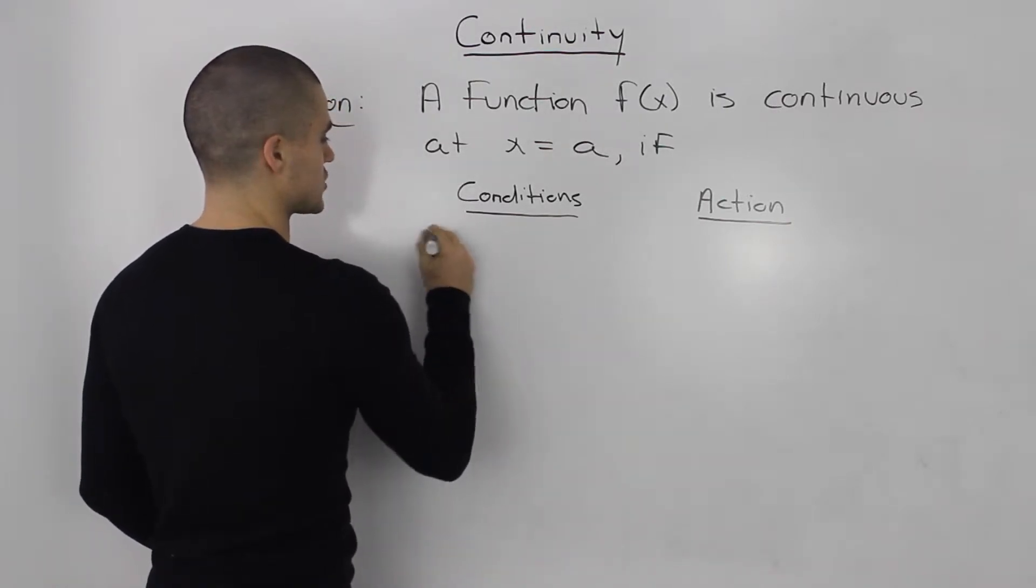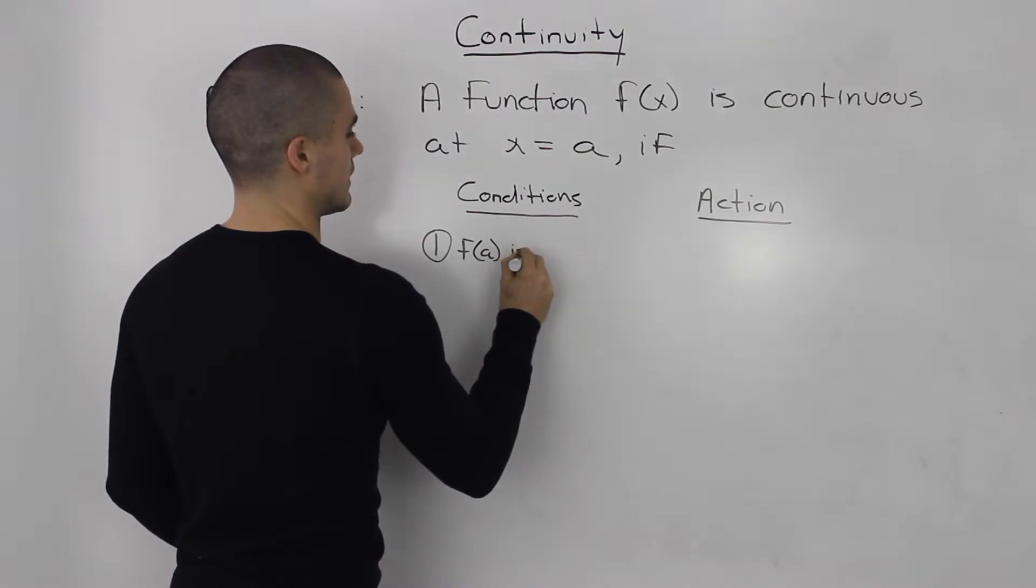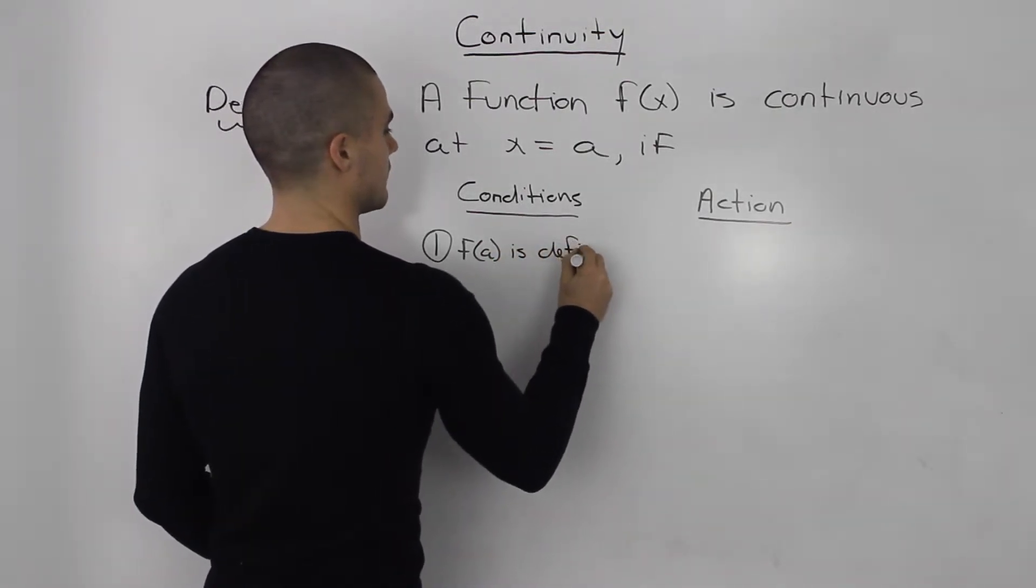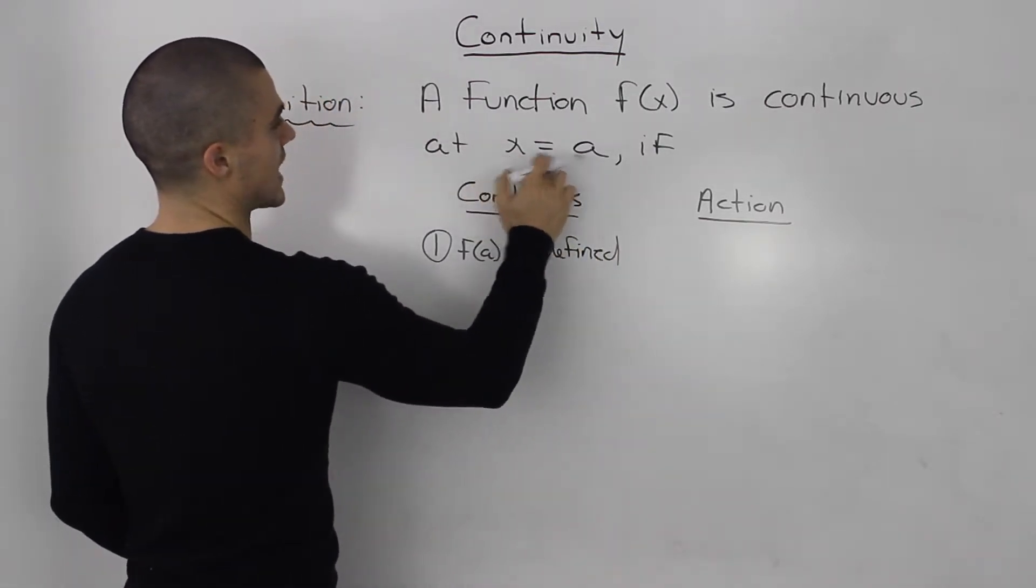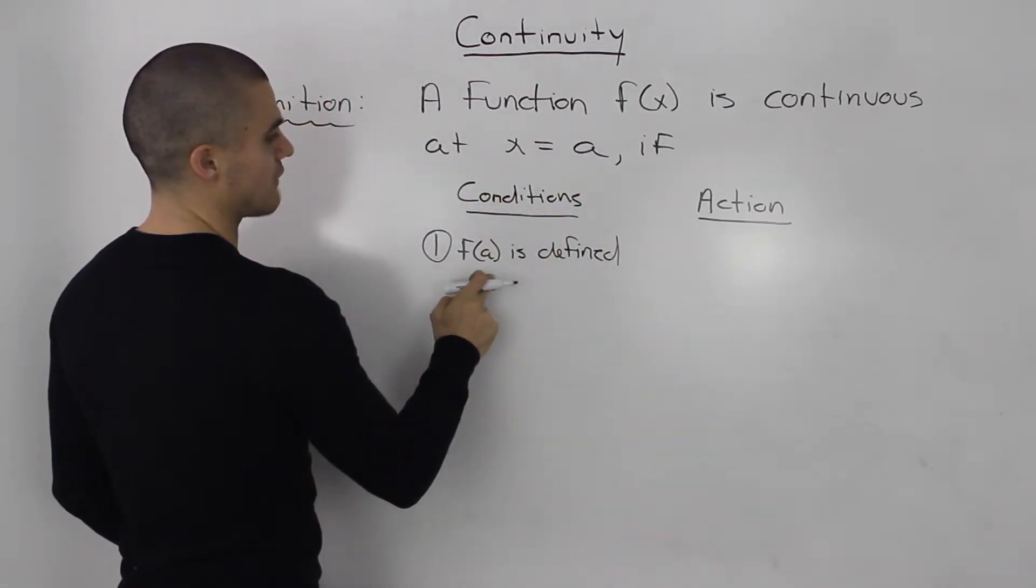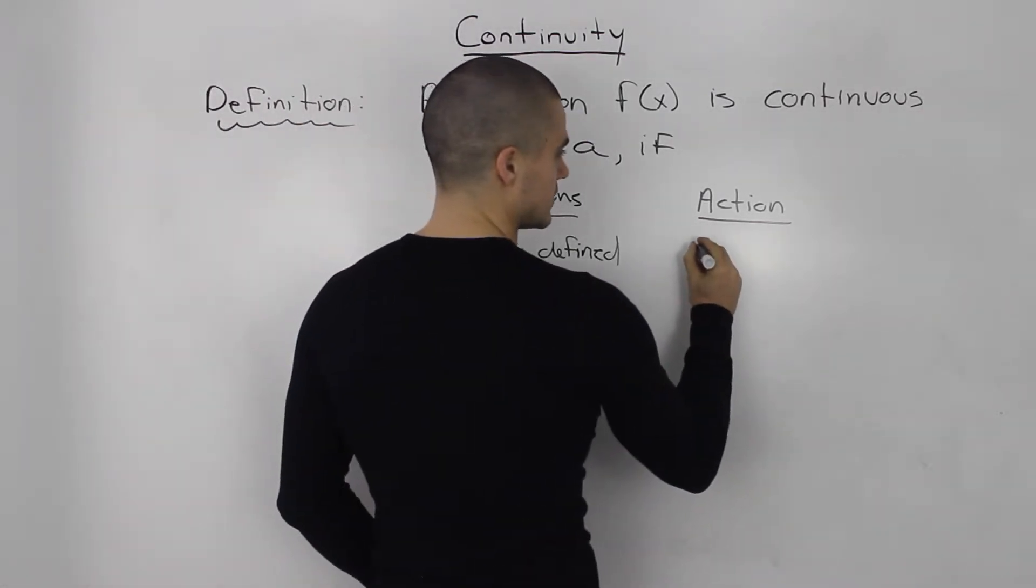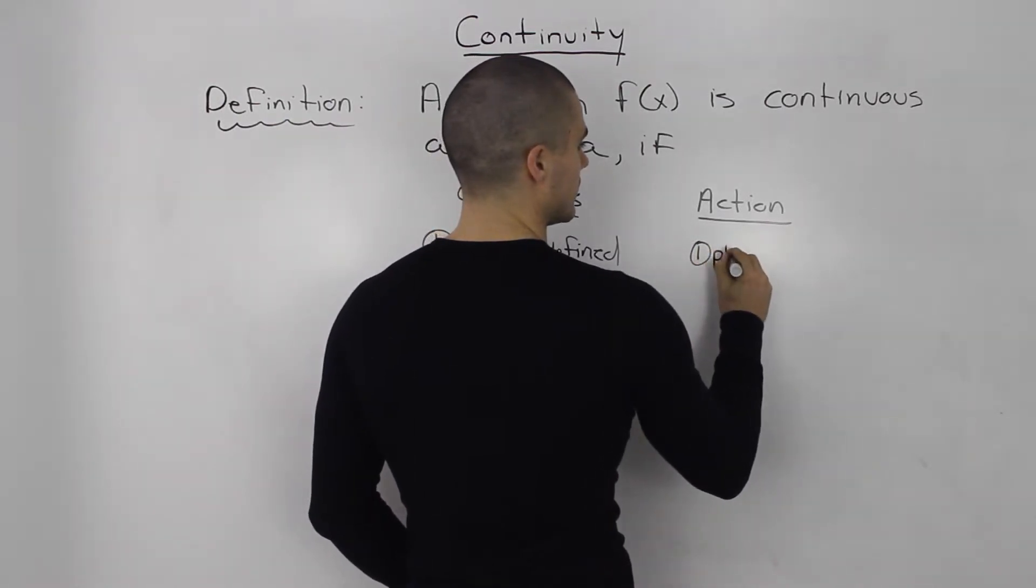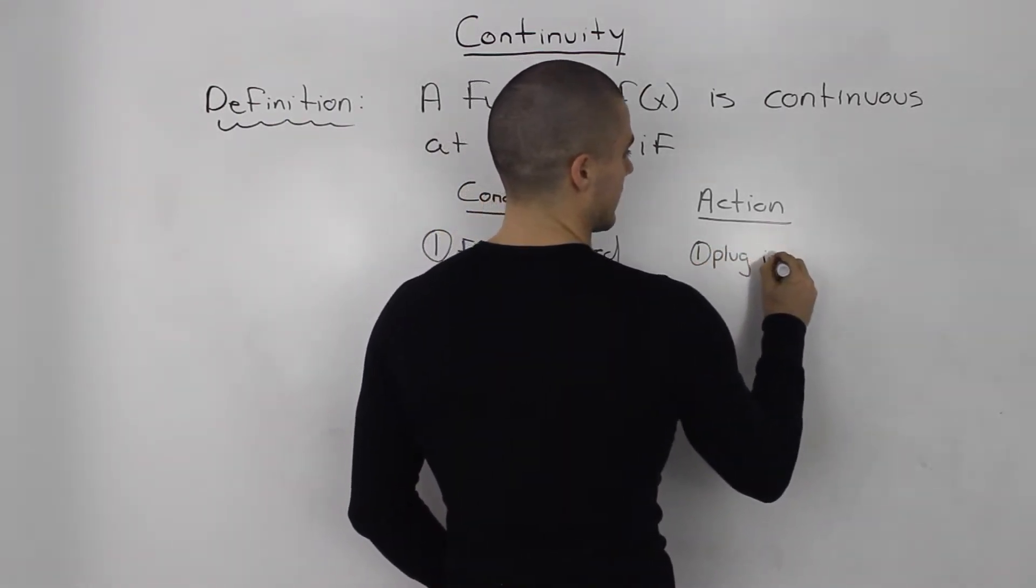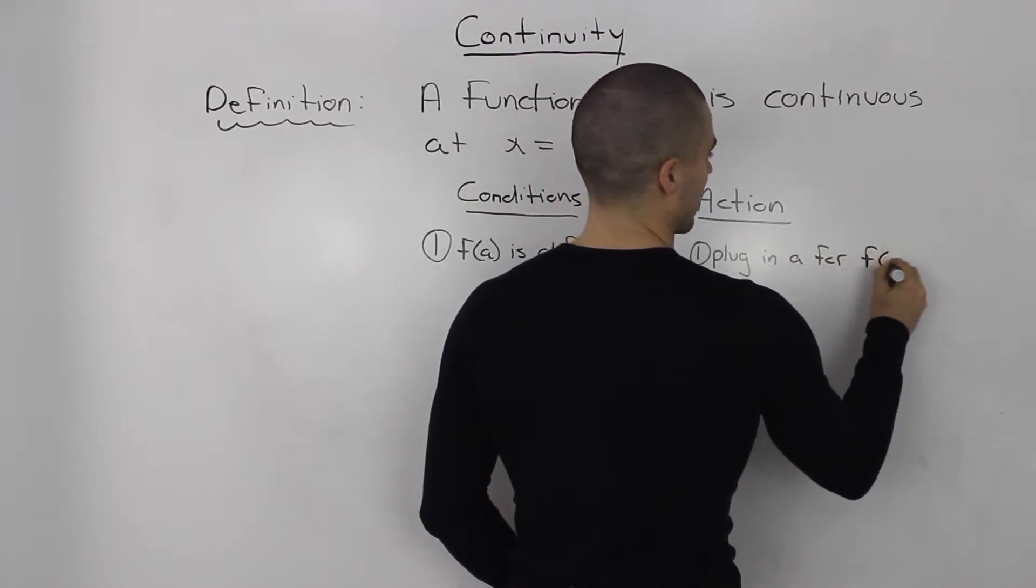The first condition is that f(a) is defined. If we're proving that a function is continuous at x = a, then f(a) has to be defined. The action for that is pretty easy: you just plug in a for f(x).